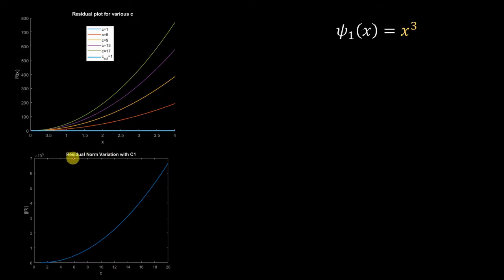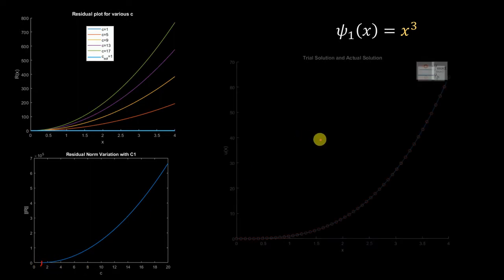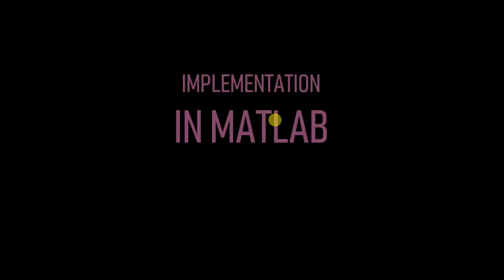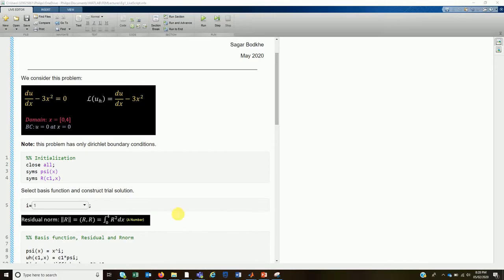The residual norm variation with c1 shows the minimum occurs at c = 1, and the exact solution and the trial solution are completely the same. Now let's see how we can implement this in MATLAB using symbolic manipulation and simple numerical methods.